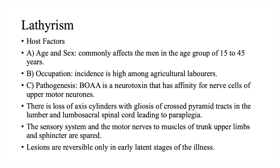Regarding age and sex, lathyrism commonly affects men in the age group 15 to 45 years and the occupation associated is agriculture laborers. Pathogenesis: BOAA is a neurotoxin that has affinity for nerve cells of upper motor neurons. There is a loss of axis cylinders with gliosis across pyramidal tracts in the lumbar and lumbosacral spinal cord leading to paraplegia. The sensory system and the motor nerves to muscles of the trunk, upper limbs, and sphincter are spared. Lesions are reversible only in early latent stages of the illness.